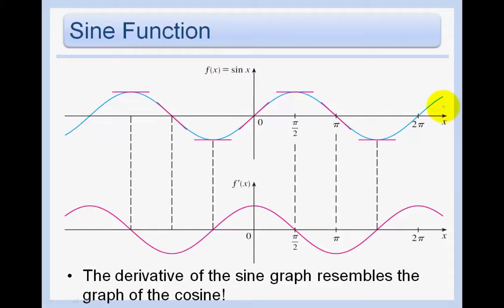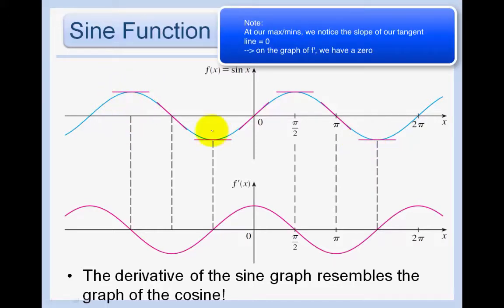Graphing its derivative means that we want to graph the slopes of the tangent lines. So the easiest part would be to look at all the maxes and the mins, the local maxes and local mins. We would have a tangent line of zero there. The slope is zero. So everywhere we see a horizontal tangent line, we would graph a zero on our derivative function.